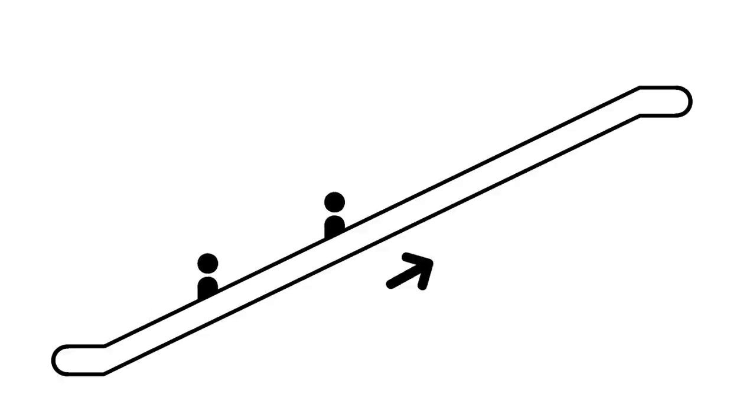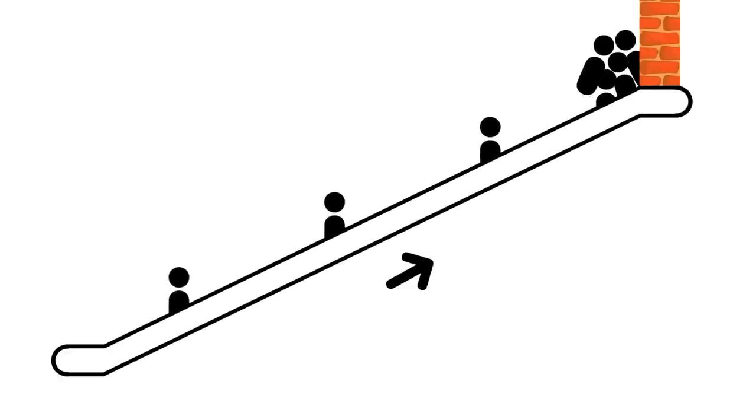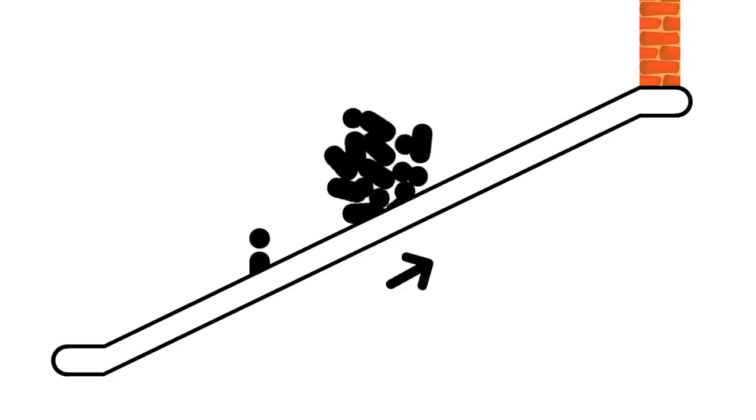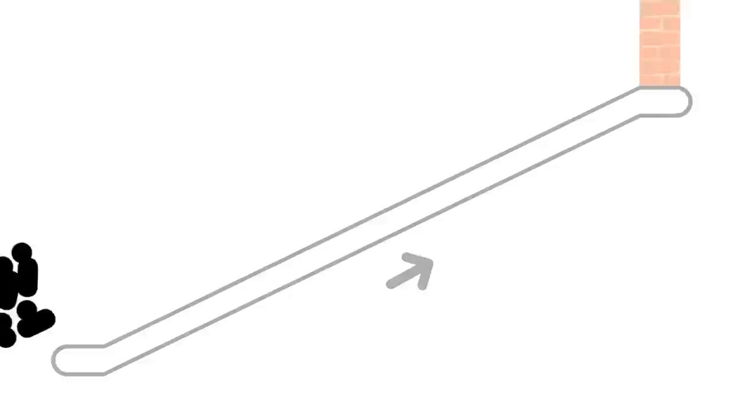Now imagine an escalator with a wall at the top, so that the people just start bunching up with no place to go. And eventually, a critical number of people builds up to form a ball, and the ball rolls back down, taking all the people with it.